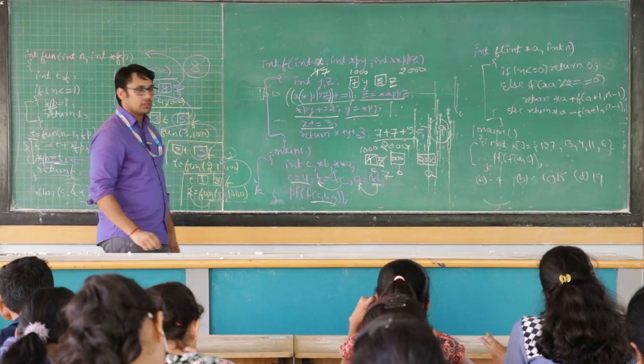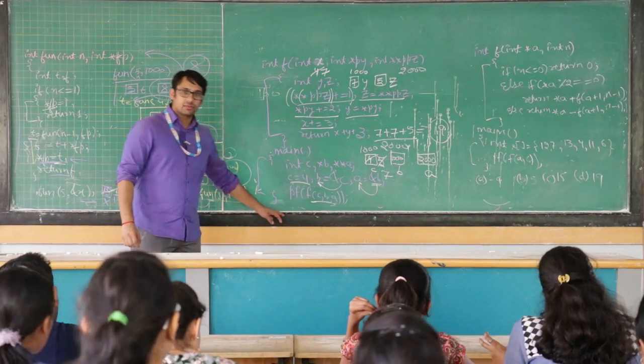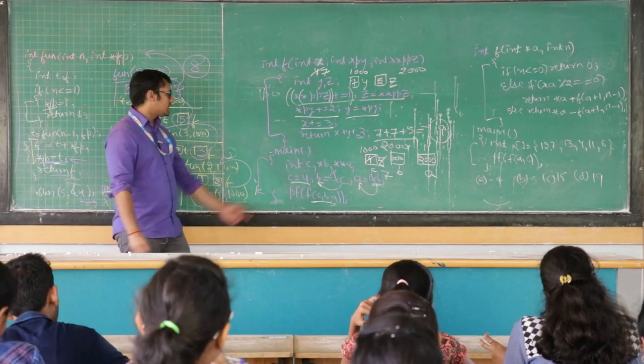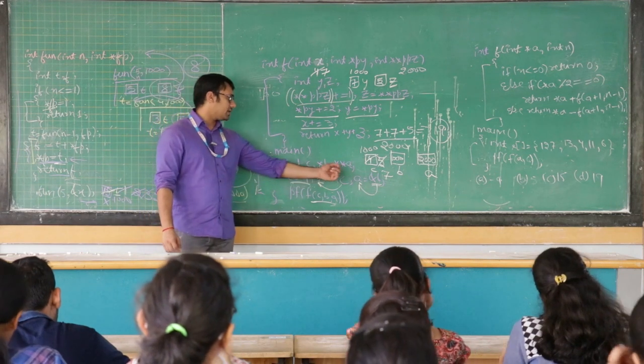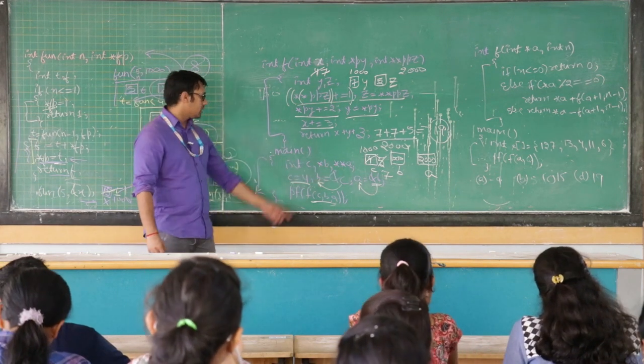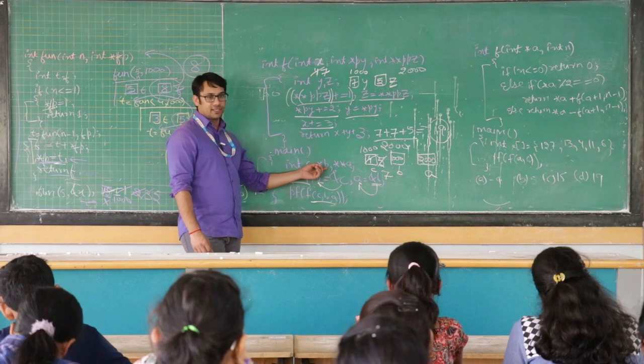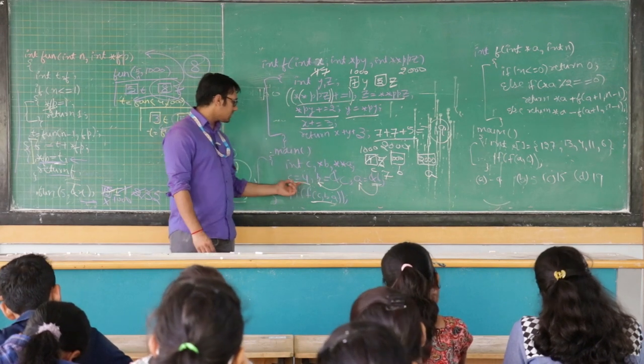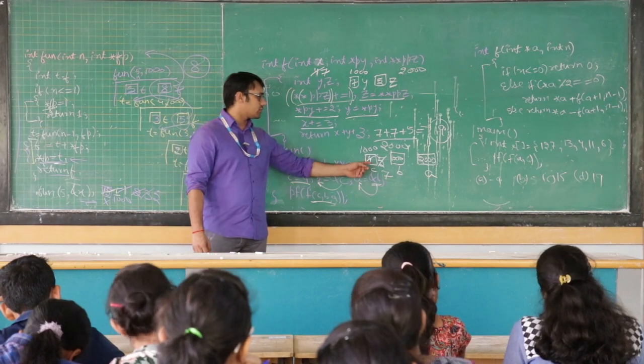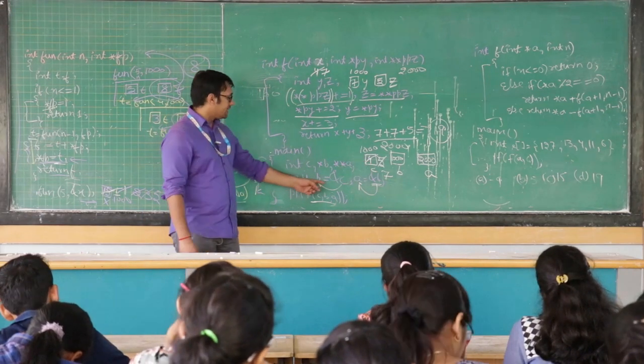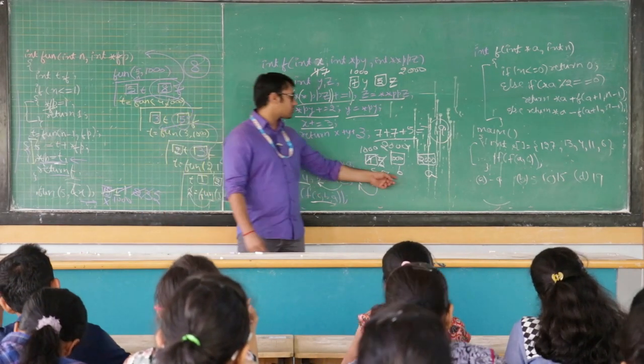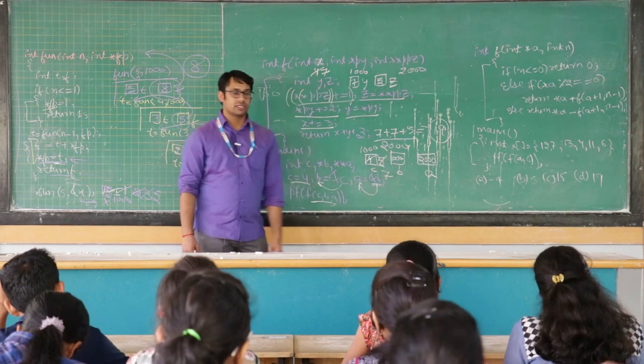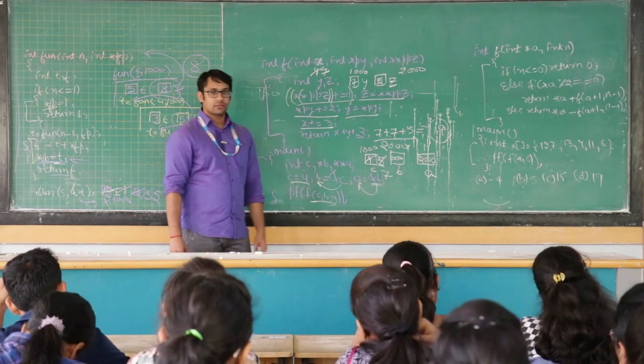Should I repeat it again? Okay. See, we have integer c, star b, star double star a. c is a variable, b is a pointer, a is a pointer to a pointer. c is equal to 4, that means c is going to store 4. b is equal to ampersand c, so b is going to store the address of c which is 1000, and a is equal to ampersand b which is 2000.